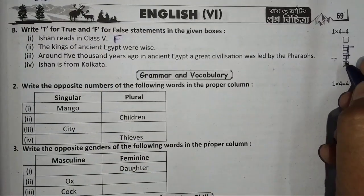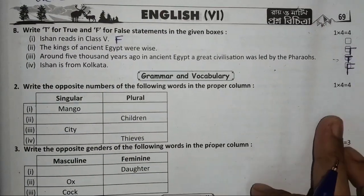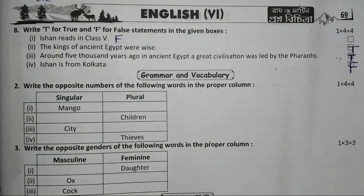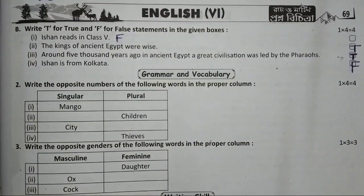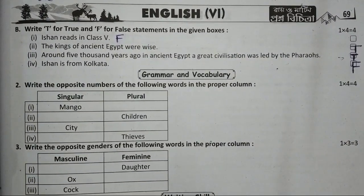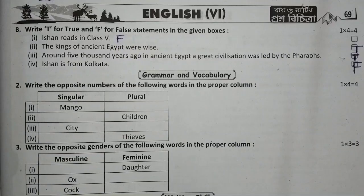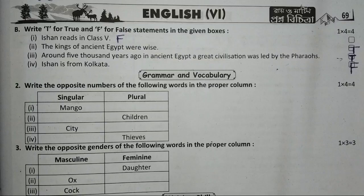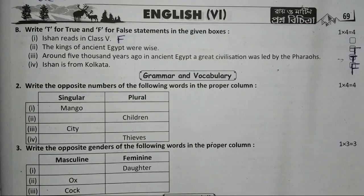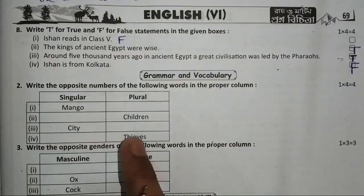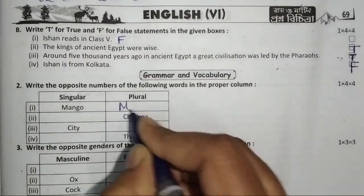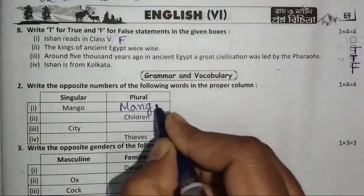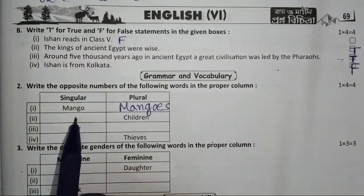Ishaan, Ishaan, Ishaan is from Kolkata. The answer is approximately 15.